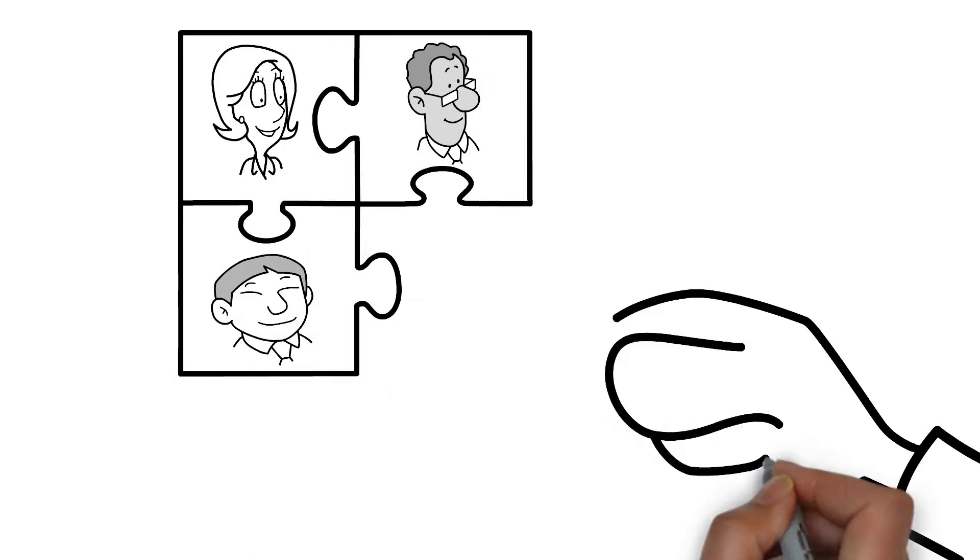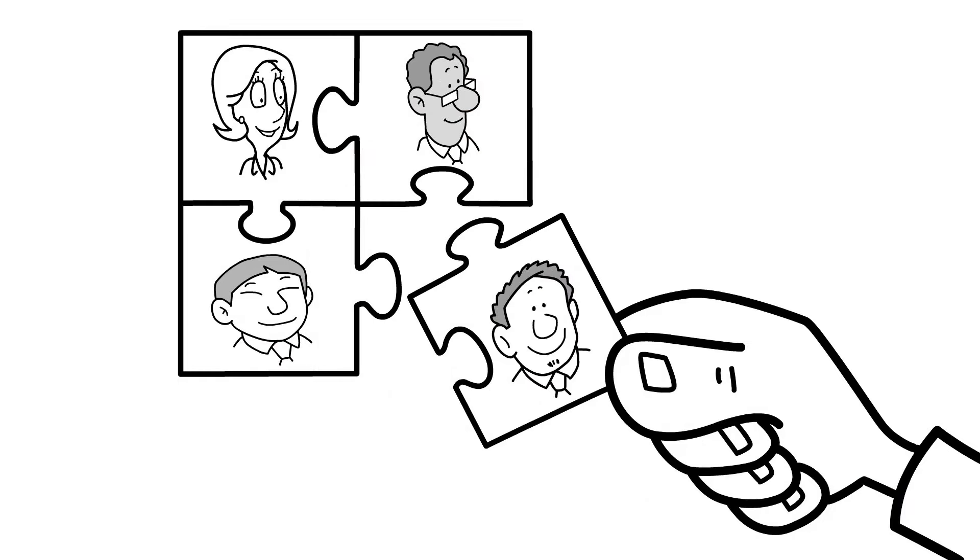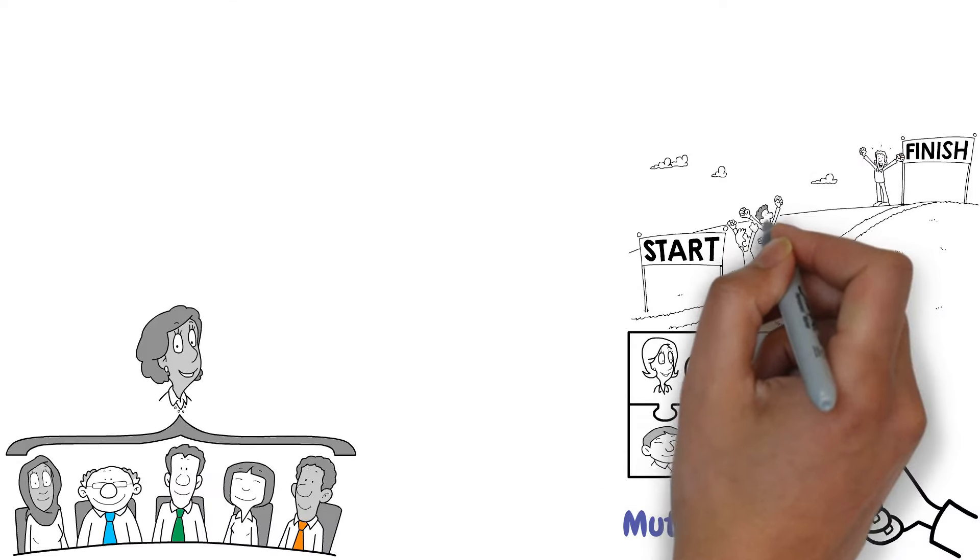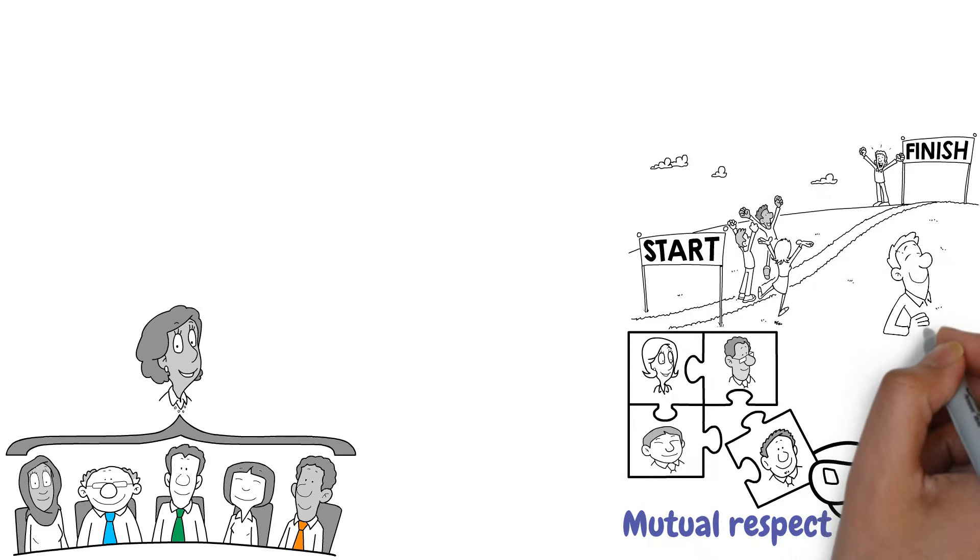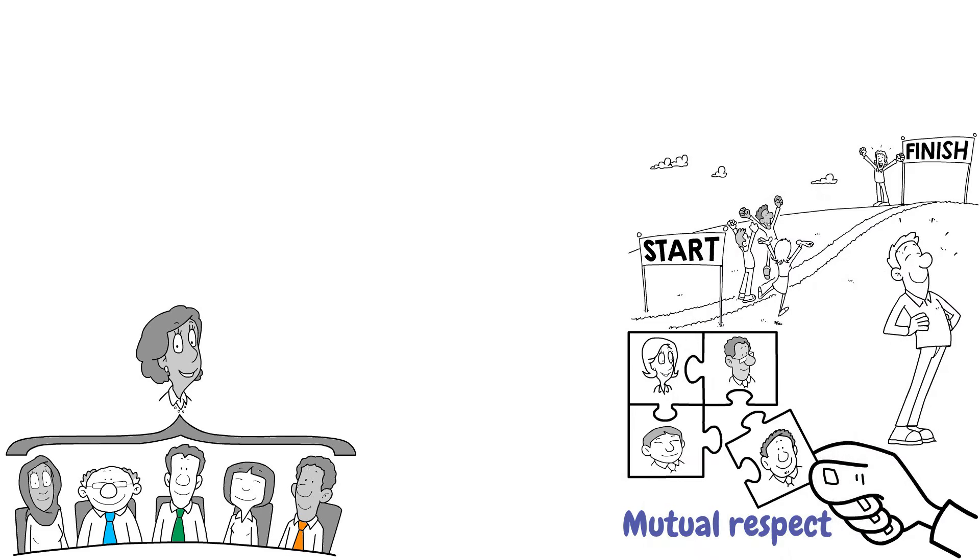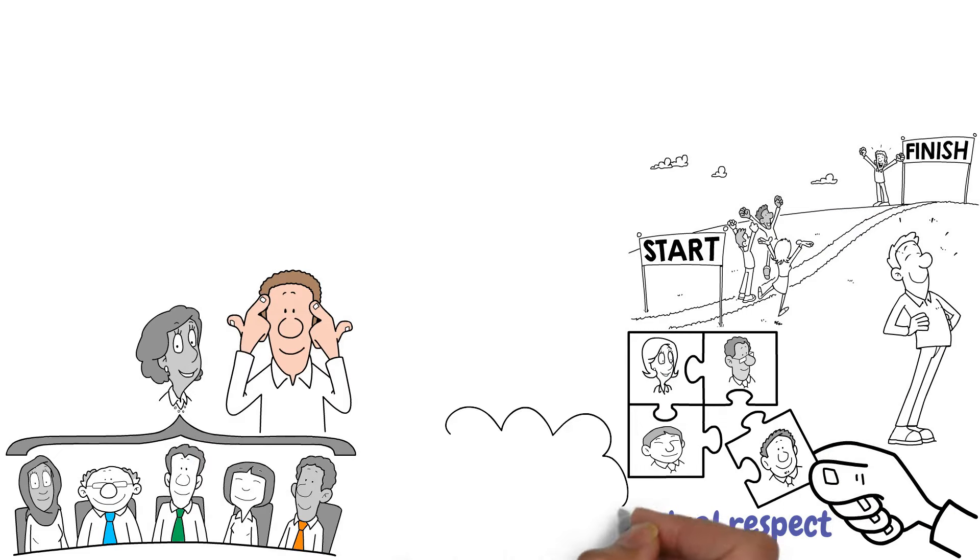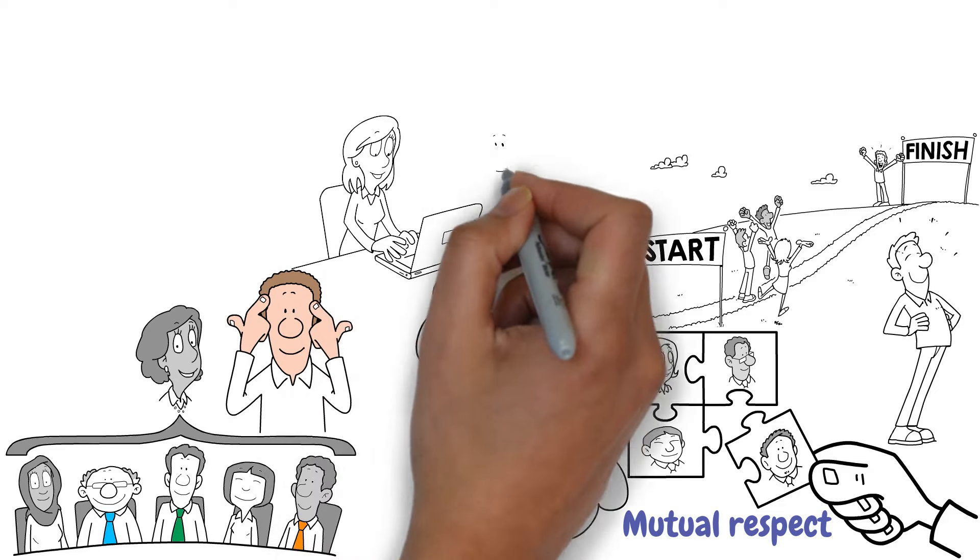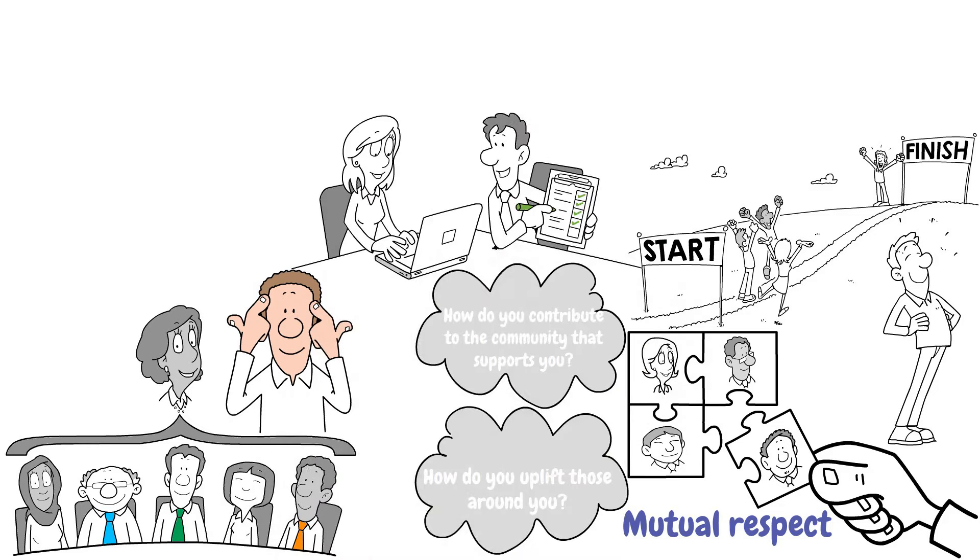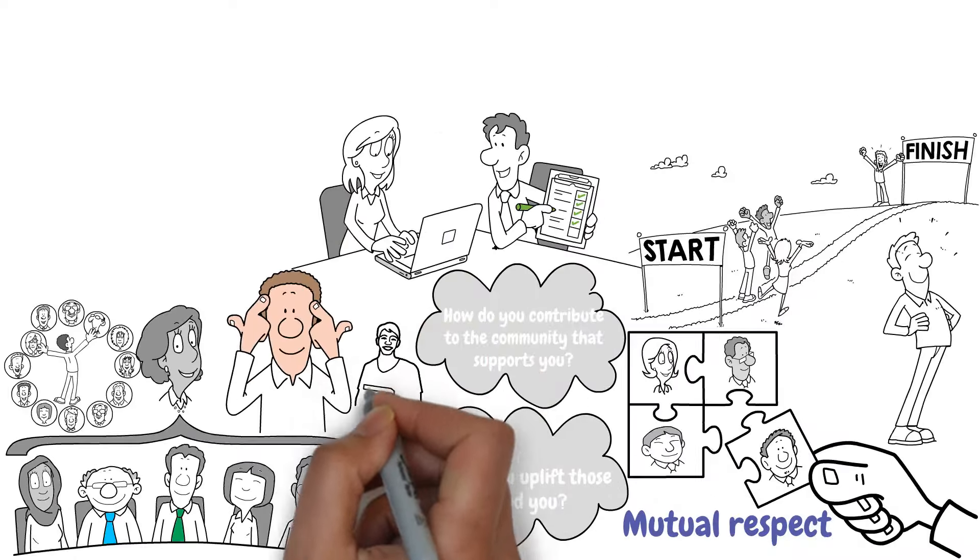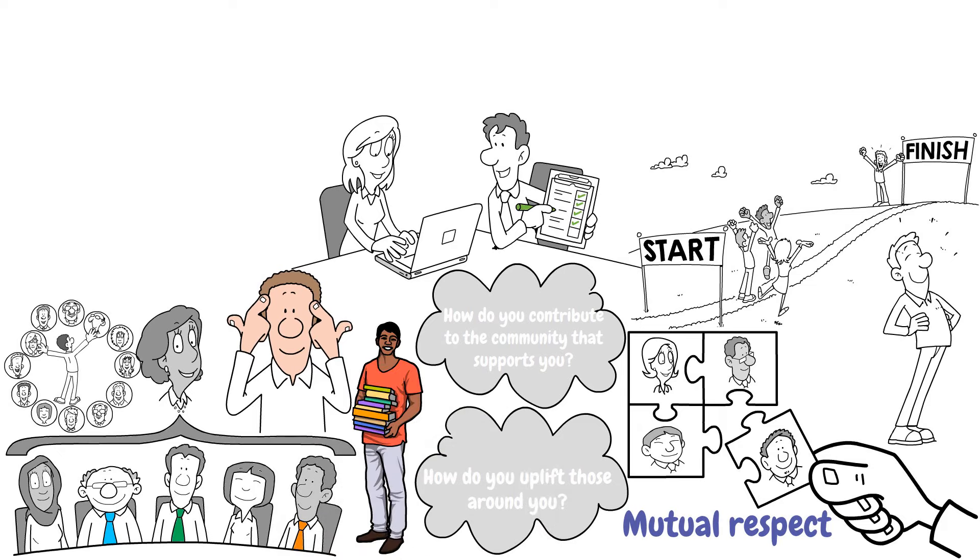As we move forward, remember that the journey of a small business owner is never a solo endeavor. It's a collective voyage that thrives on community support, shared knowledge, and mutual respect. The stories of Rose and Jack aren't just tales of individual triumph, but are testaments to what we can achieve when we pull together as a community. In each of your ventures as you strive for success, take a moment to reflect on the wider impact of your actions. How do you uplift those around you? How do you contribute to the community that supports you? Success is sweeter when it's shared, and the strongest businesses are those that enrich not just themselves, but also the lives of others around them.